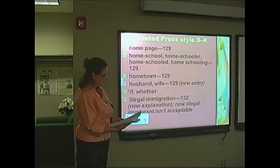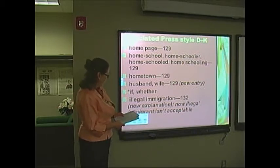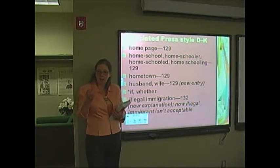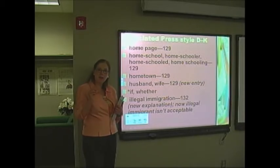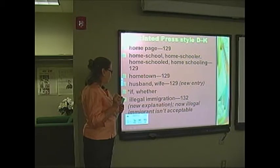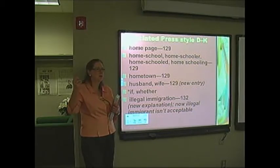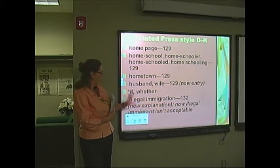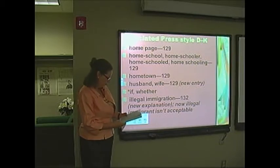Would you add if and whether right above illegal on the right-hand column on page 132? Whether is good when there's a list of possibilities — he doesn't know whether to go to the store or something else. And there's a whole new explanation about illegal immigration at the bottom of page 132. It says entering or residing in a country in violation of civil or criminal law. Use illegal only to refer to an action, not a person. This is a major change — it's illegal immigration, not an illegal immigrant.